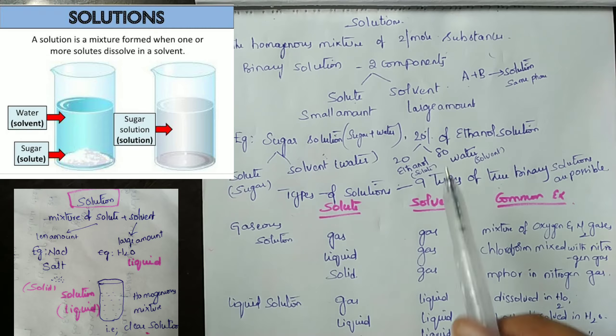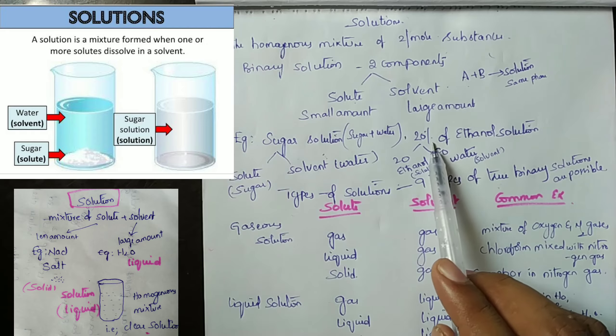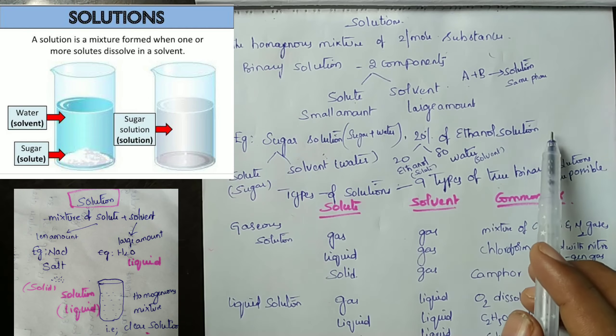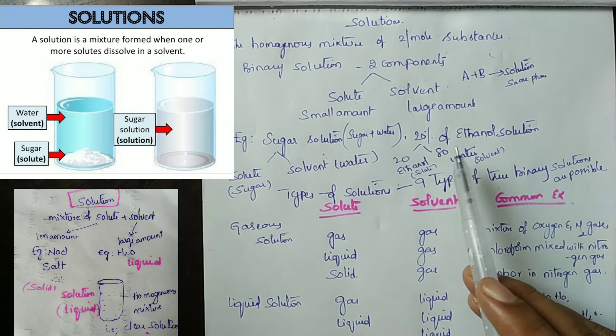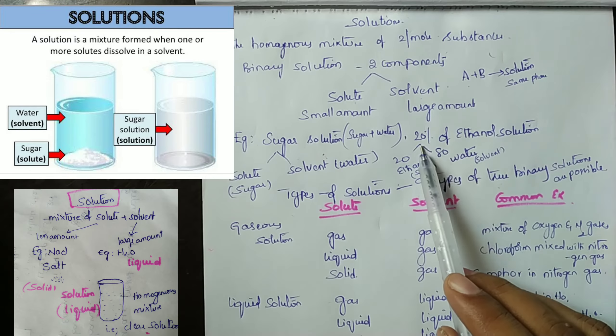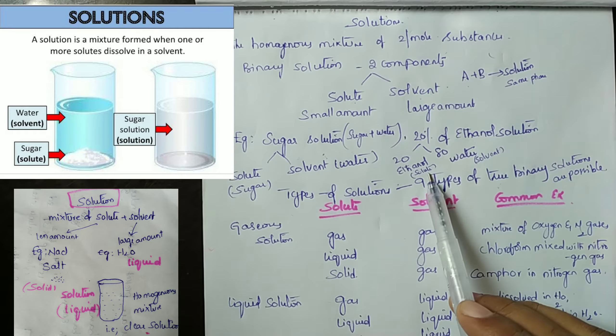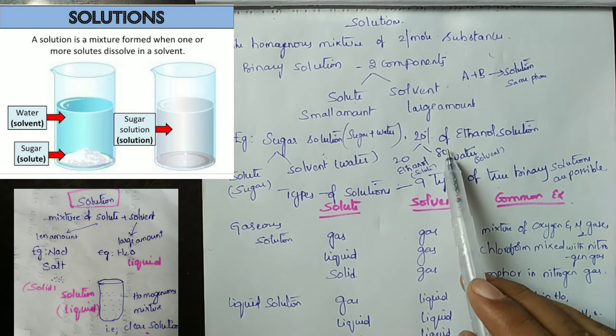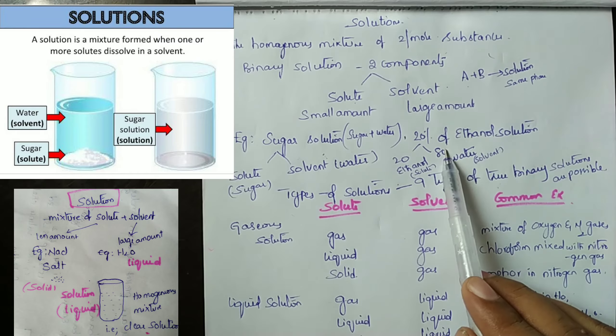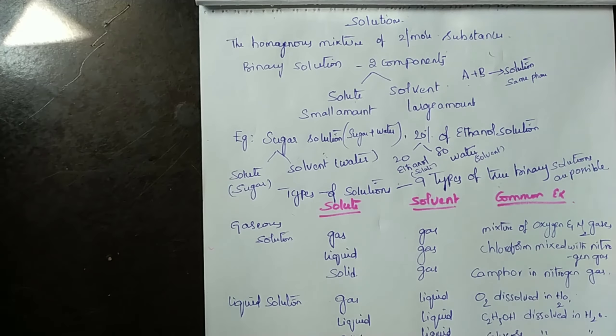Example two: in a 20% ethanol solution, 20% ethanol is the solute and 80% water is the solvent.